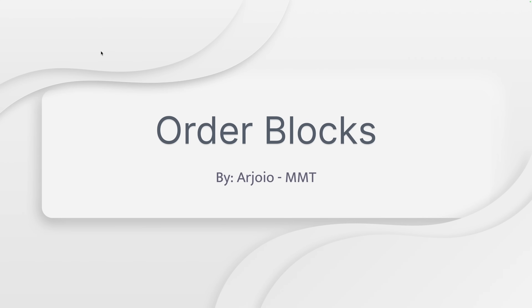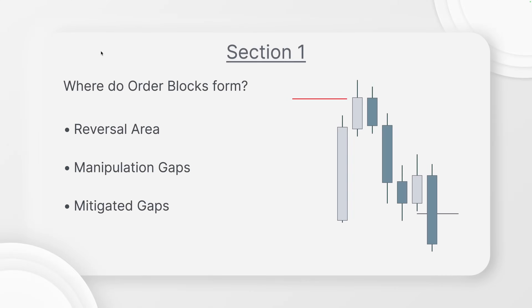We see order blocks by REO EO MMT. Moving on to section one: in order for us to find the strongest order blocks that actually will guide us to making profits, we need to understand where order blocks form.